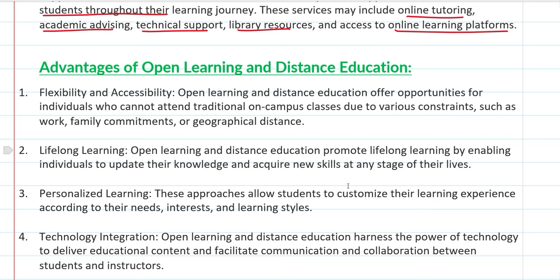Now, what are the benefits of open learning and distance education together? First, flexibility and accessibility. Any person who cannot join a school or university will find it very easy and flexible to study through open learning and distance education.